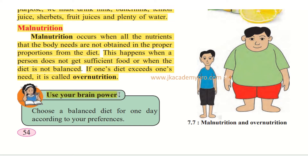Use your brain power and think about it. Choose a balanced diet for one day according to your preferences. You have to make a food pyramid and write all the things you love to eat, put them in the right proportion, and try to see whether your diet is balanced or not.